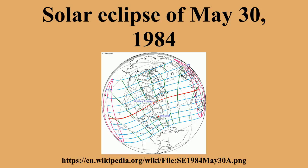An annular solar eclipse occurs when the Moon's apparent diameter is smaller than the Sun's, blocking most of the Sun's light and causing the Sun to look like an annulus. An annular eclipse appears as a partial eclipse over a region of the Earth thousands of kilometers wide.